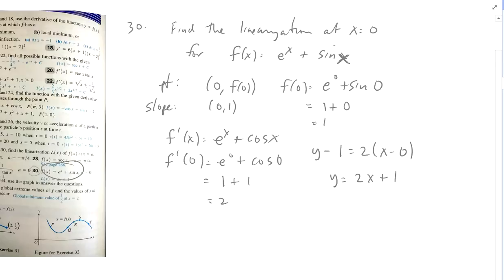Instead of writing y, because we don't know which y we're referring to, we write L(x), because that's the linearization or the tangent line, equals 2x plus 1. All right, there we go.